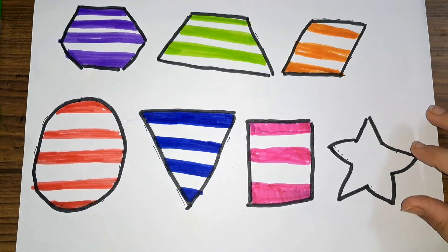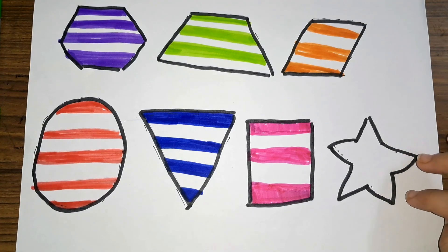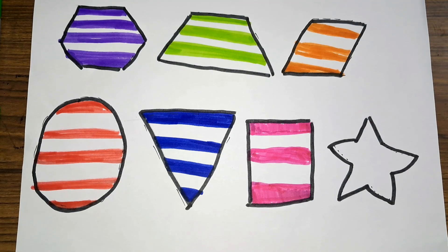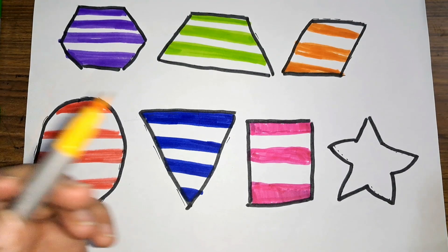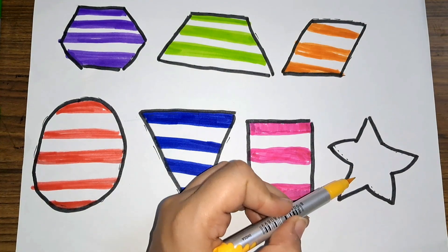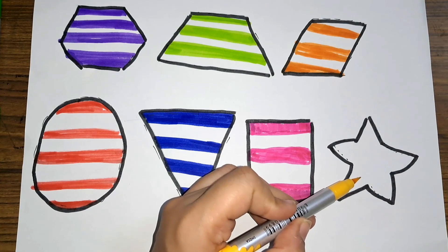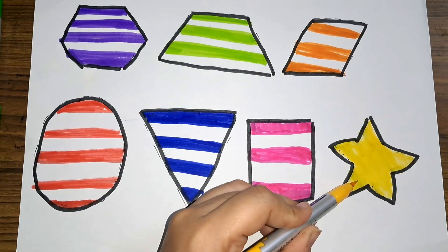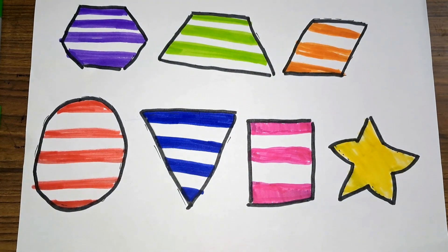Next we have a star. Should we color the star? Let us color it yellow. One, two, three. There you go.